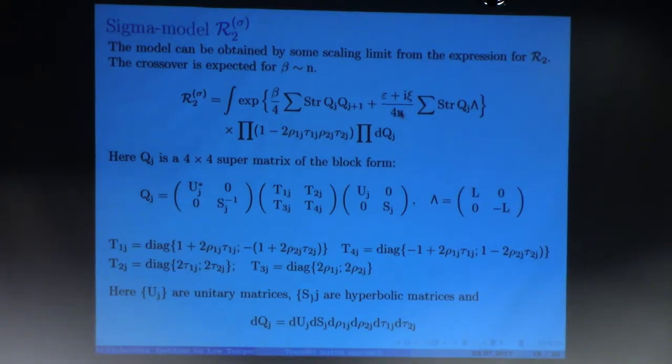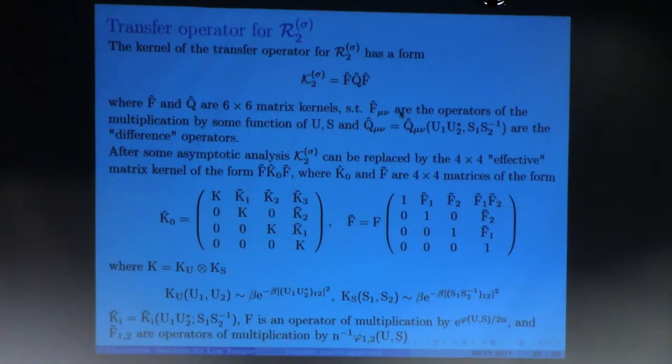And after diagonalizing and doing some transformation, we come to the model with transfer operator which now is only 6 times 6 matrix, which is much better than 60 times 60. So we need to analyze how does it behave.